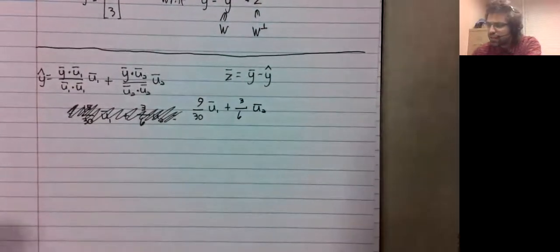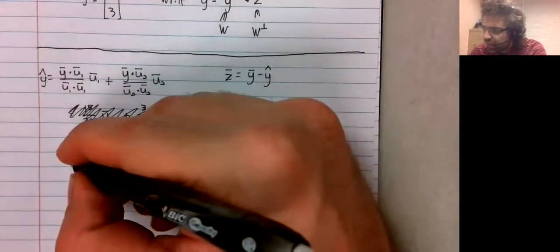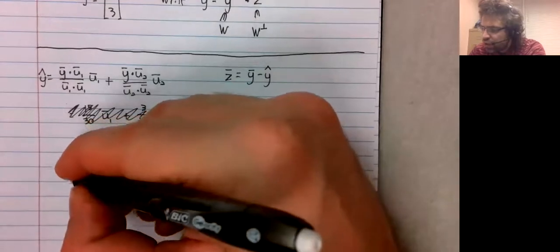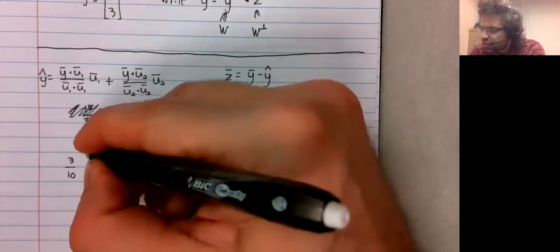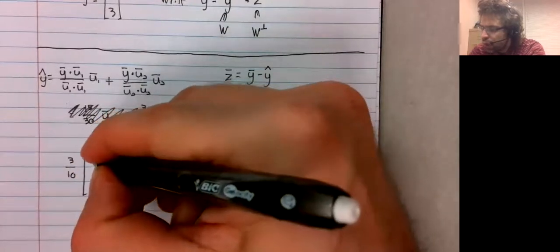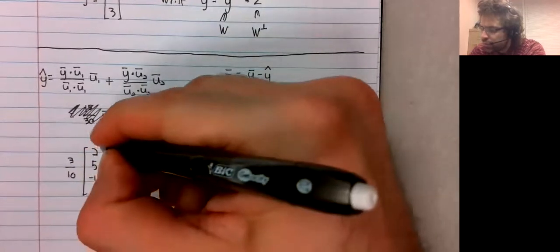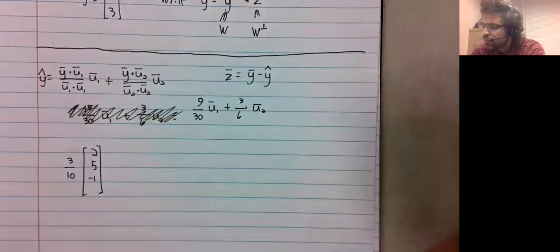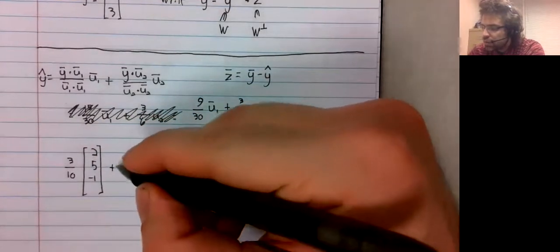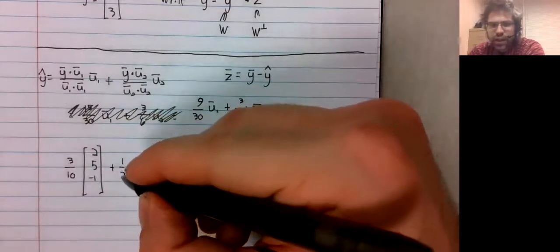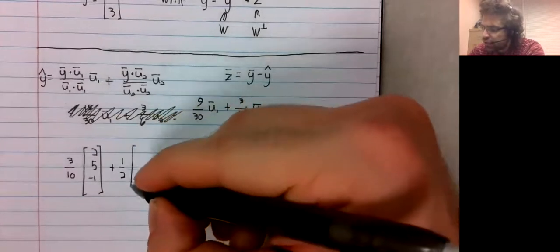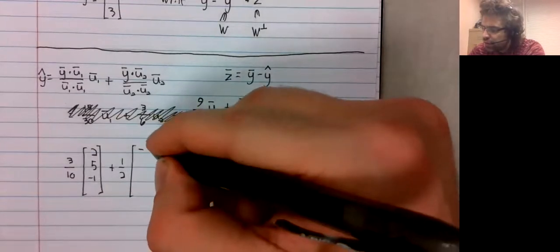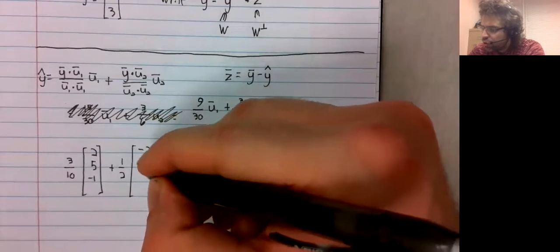So that's three tenths, three tenths u1, plus one half, plus one half u2.